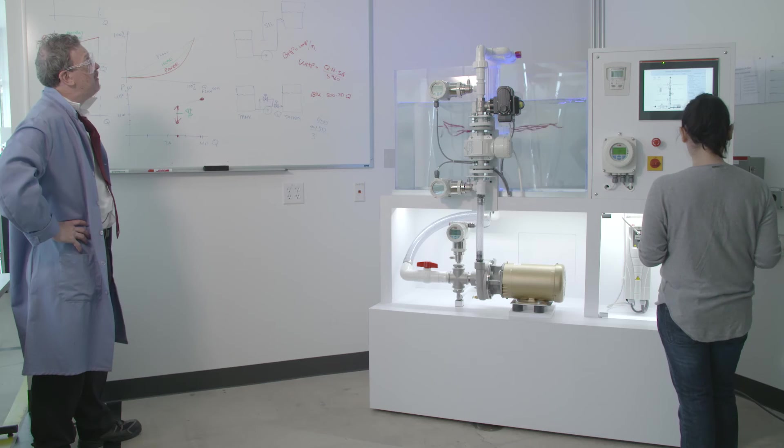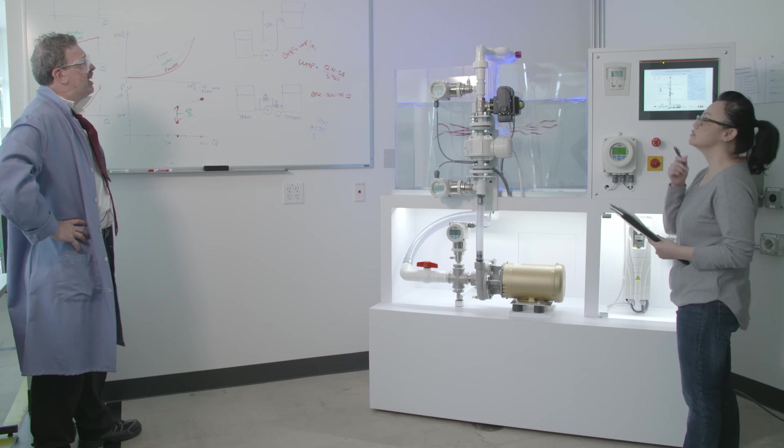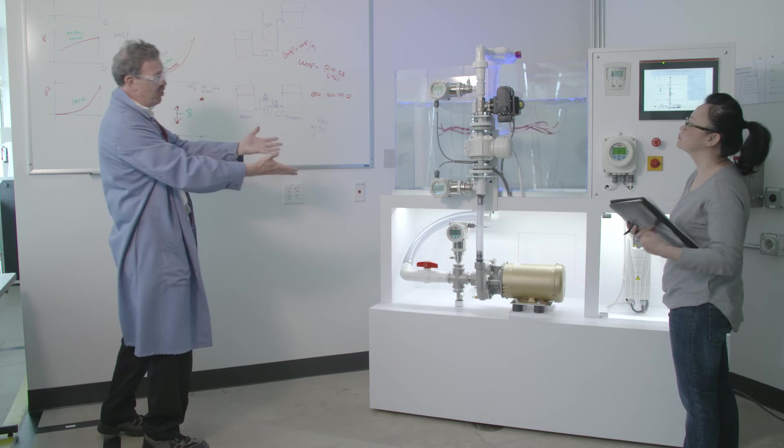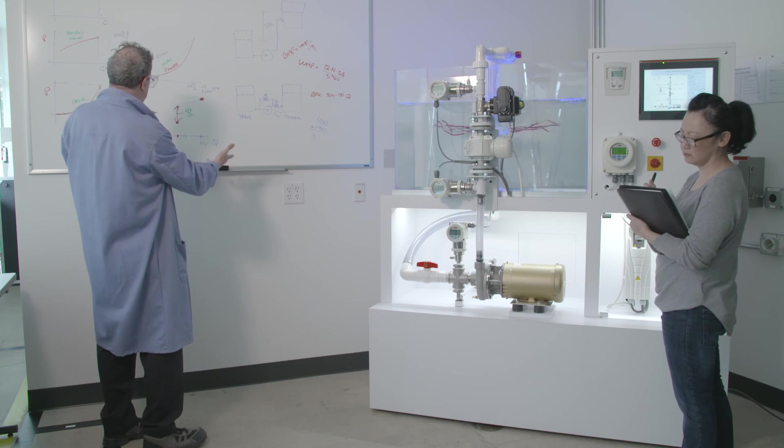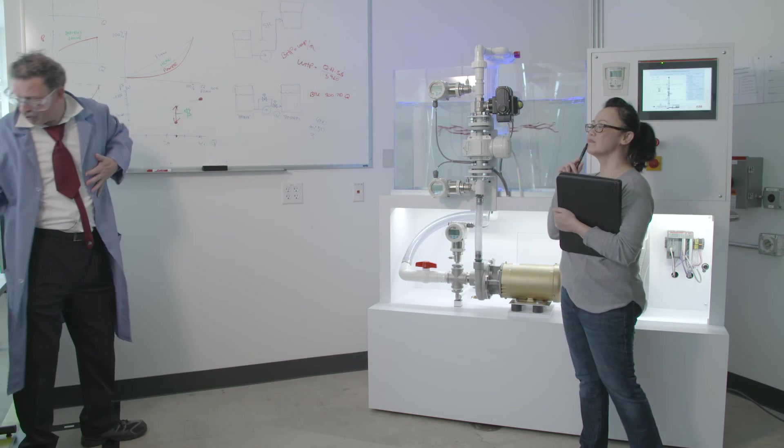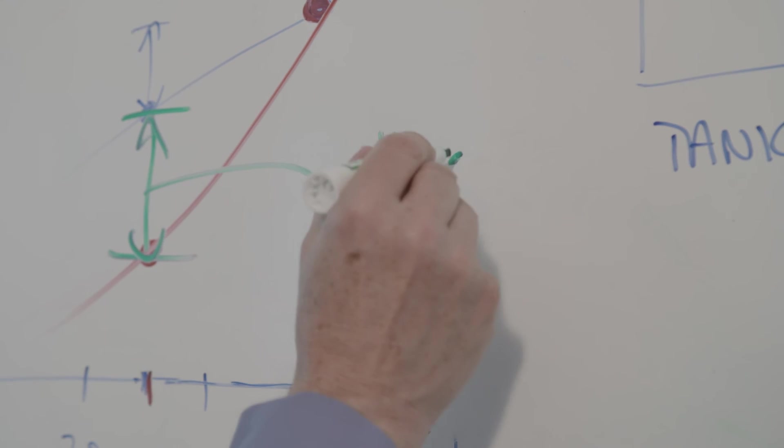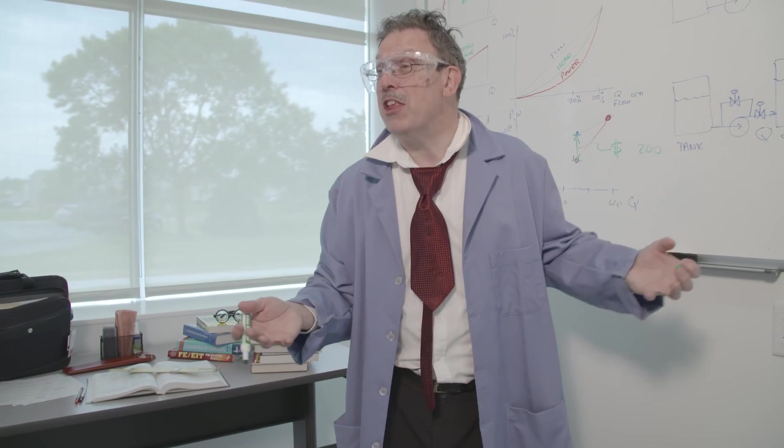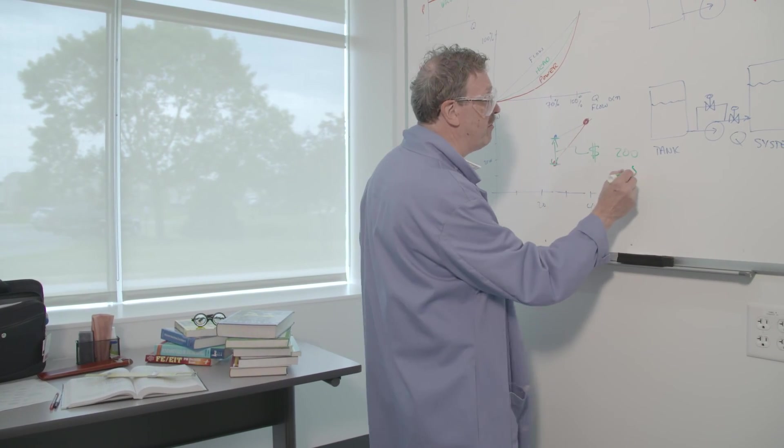We sure are. In fact, electricity usually costs about say 10 cents a kilowatt hour. And for a little demonstration like this, we would be saving, let's see, how much would that be? About $200 a year. Yeah, about $200 a year. But a real system would be about 500 times bigger than this. That means we have 500 times the savings, which would be about $100,000. That's a lot of books!